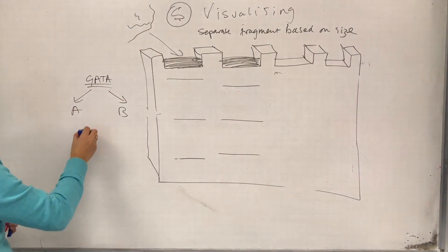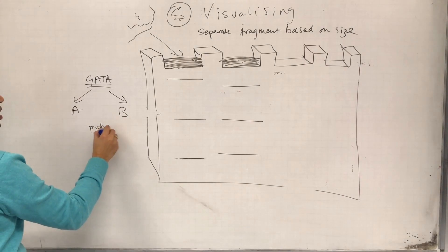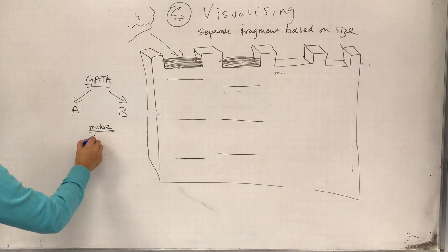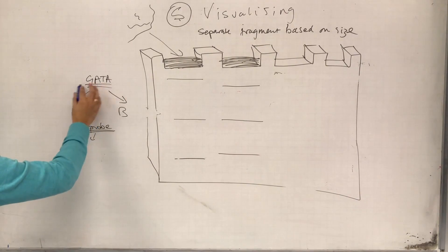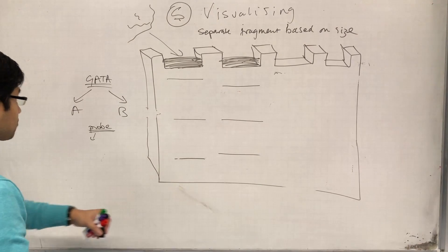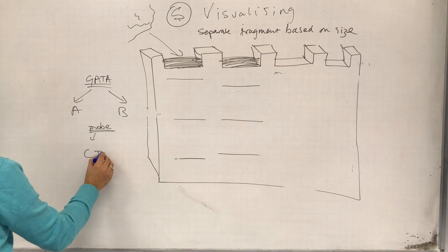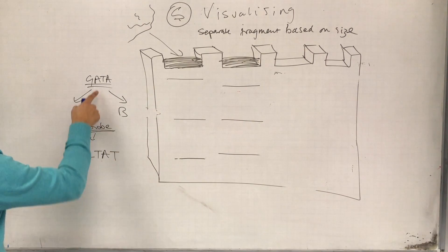And so what I do is I use what is called a synthetic probe. And the probe is a synthetic nucleotide which has a complementary sequence to the sequence that I'm looking for. So I would make a molecule in my lab that had the sequence CTAT, complementary to that one.